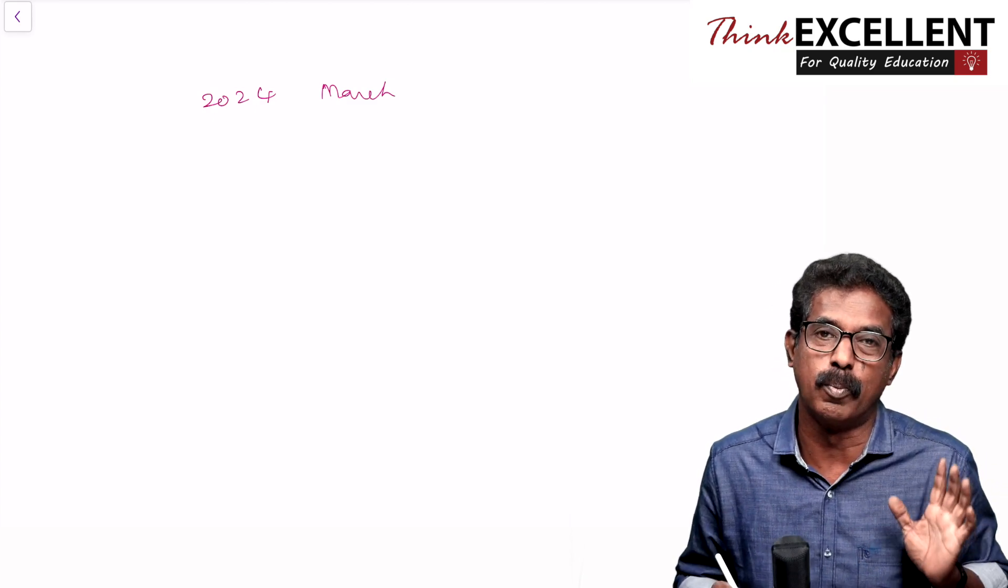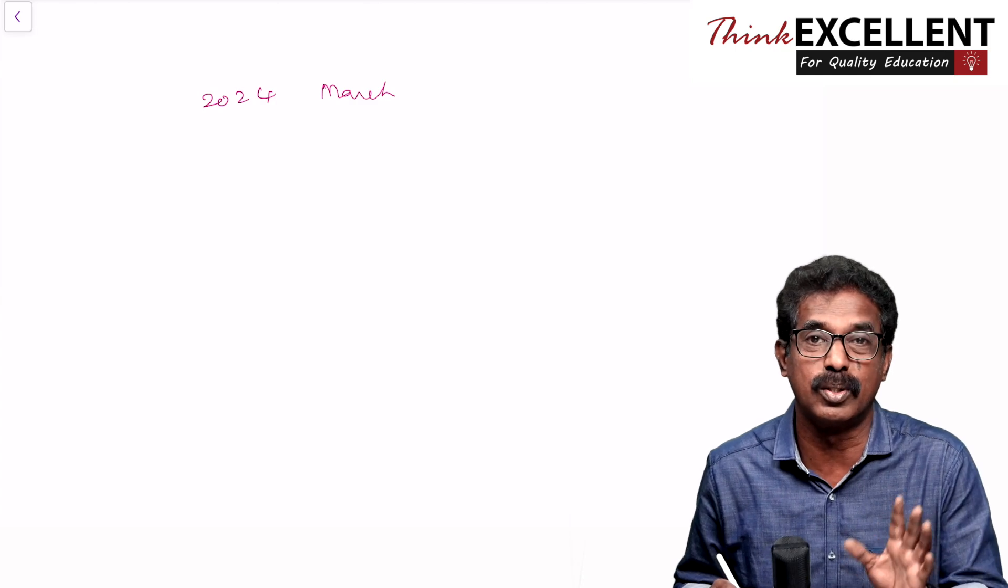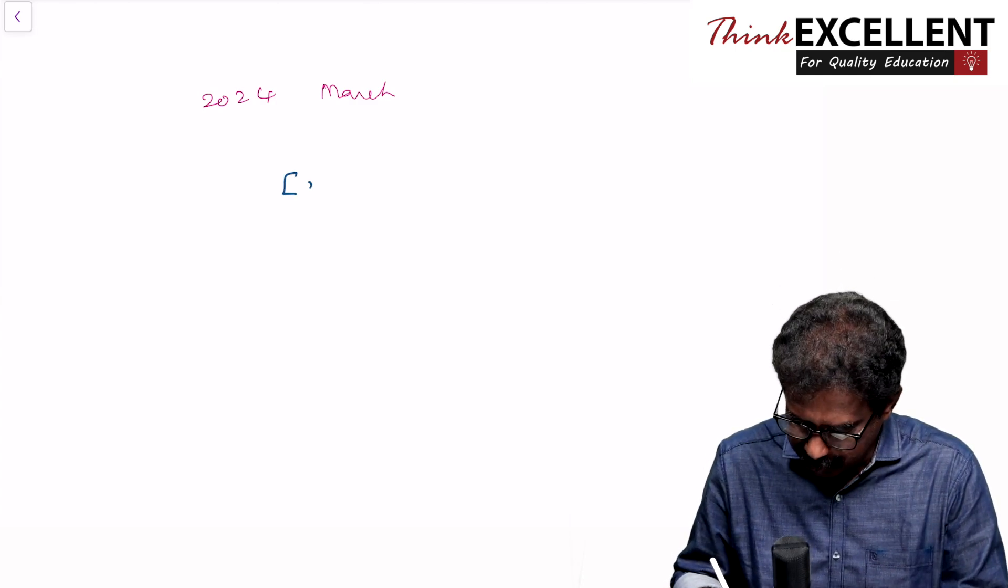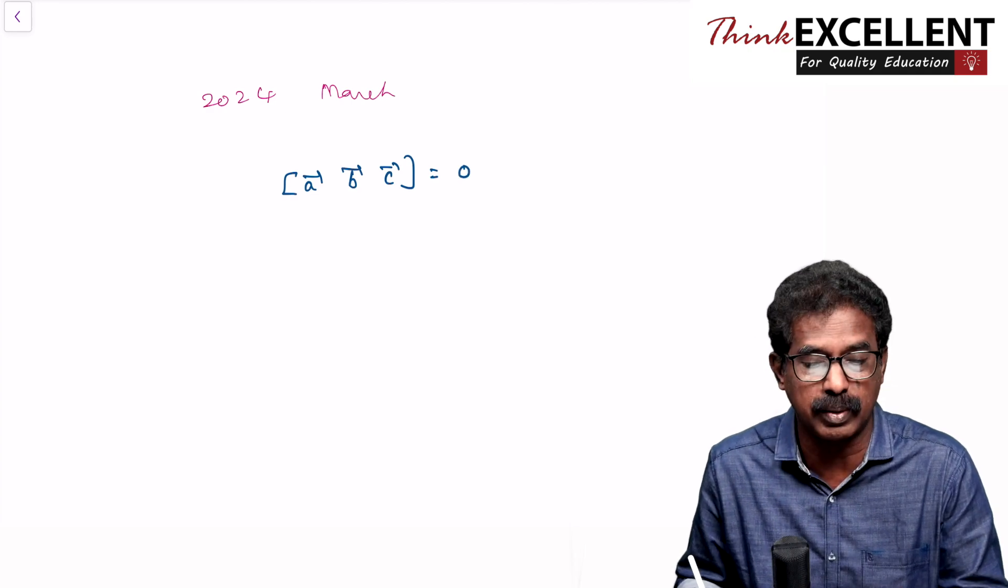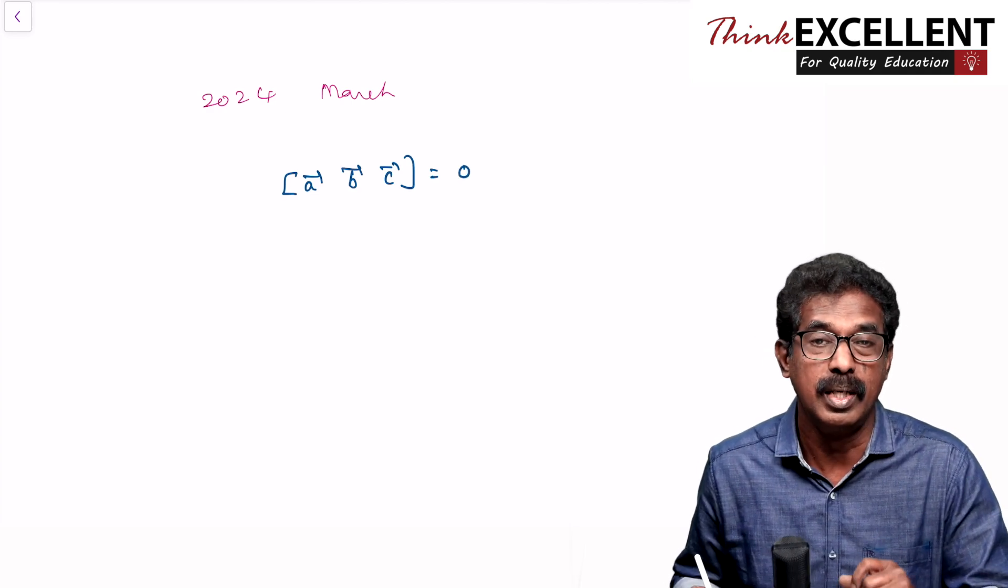Prove that the three vectors are coplanar. Very simple. Three vectors are coplanar, what is the condition? The box product a vector, b vector, c vector, the answer is zero. You can say the vectors are coplanar. Three mark question in the last year, you can say the matrix.